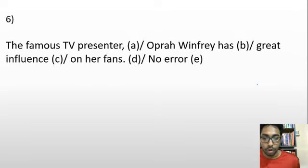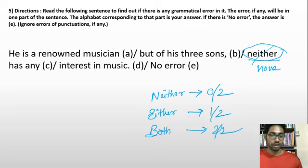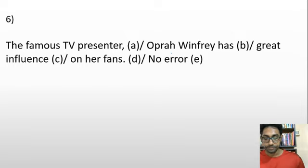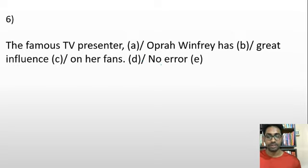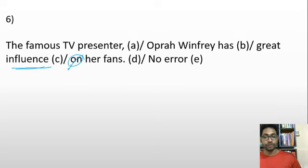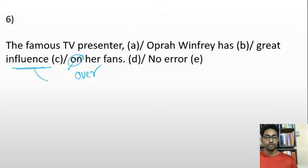Question 6: 'The famous TV presenter, Oprah Winfrey, has great influence on her fans.' The error is the preposition. 'Influence on' is incorrect — you have influence over somebody. So the correct form is 'influence over her fans,' not 'influence on.' Influence over, not influence on. Straightforward sentence.